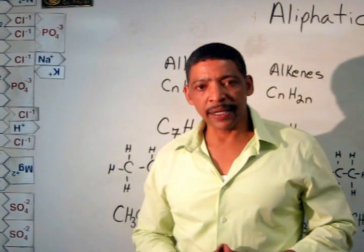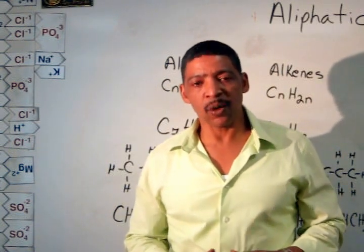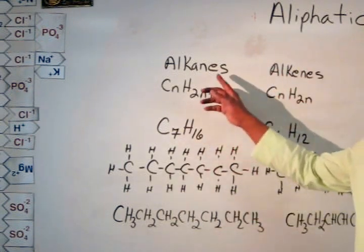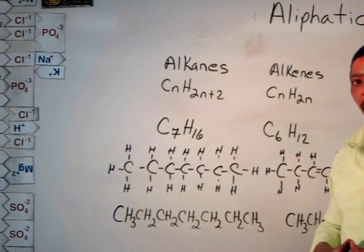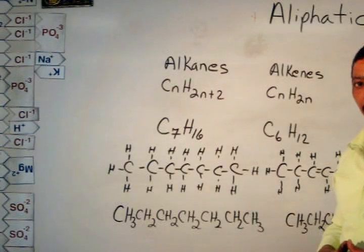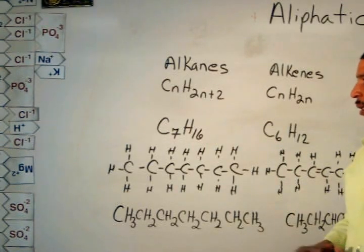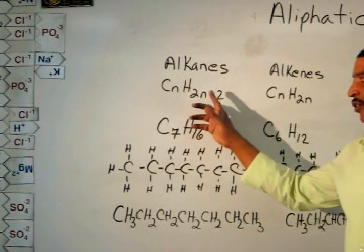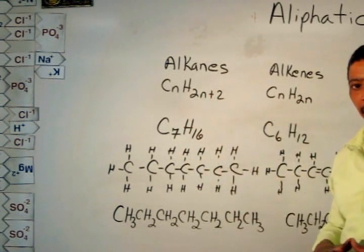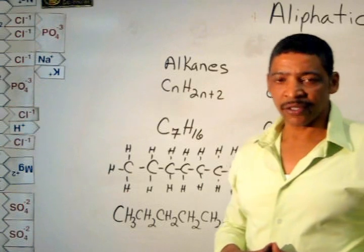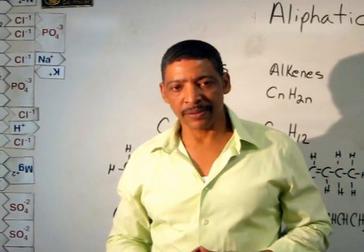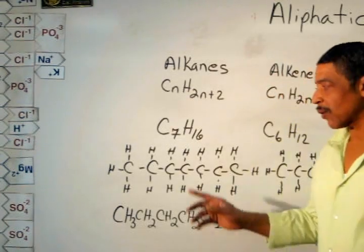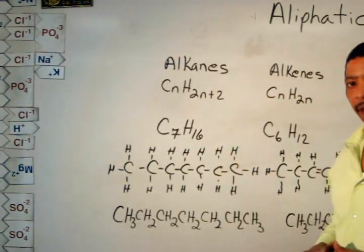Let's begin with a class of hydrocarbon that contains only single bonds. These are known as the alkanes. All alkane compounds will follow this general formula: CnH2n+2, where n represents the number of carbon atoms. This is an example of a chemical formula for an alkane.